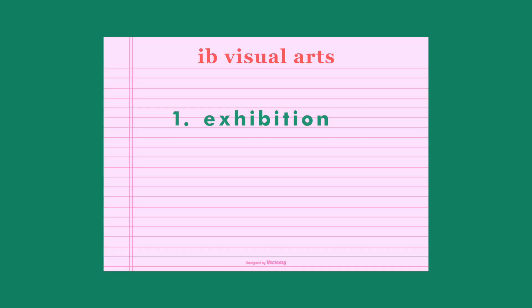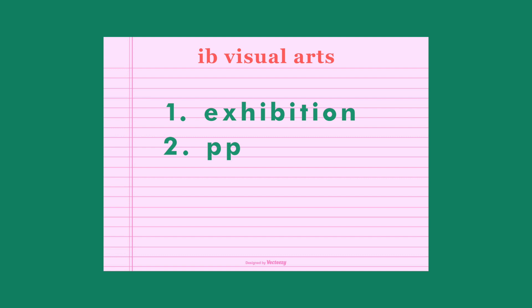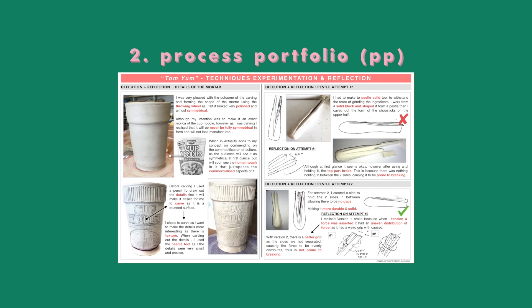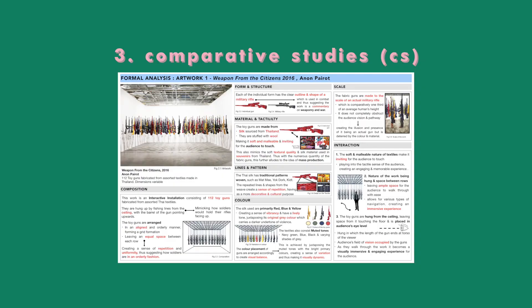IB art is different from AP art and A-levels art because it's divided into three components. The first part is exhibition, the second part is PP which stands for process portfolio, and the third part is CS which stands for comparative studies. PP is basically a process portfolio that documents how you make each work, kind of like a sketchbook or research journal, and CS is the theory side of things. If you want to see my submissions for PP and CS, they are on the website linked below. This video will be talking about the exhibition part, where you have to submit eight to ten works and a picture of your setup.